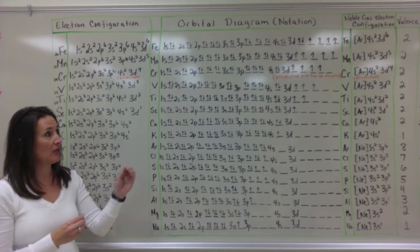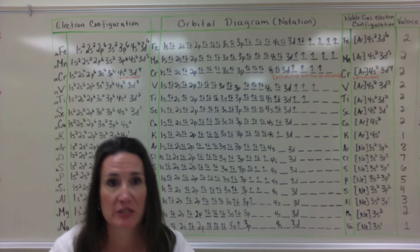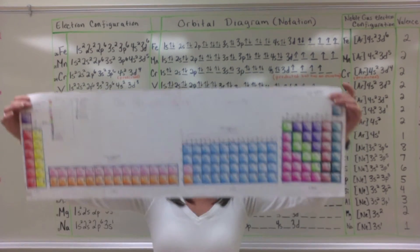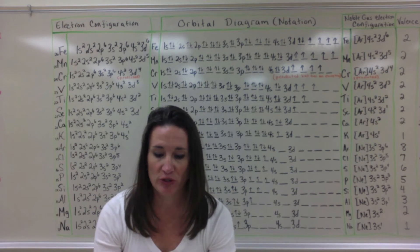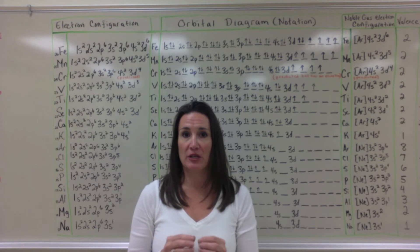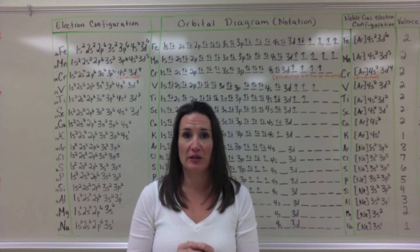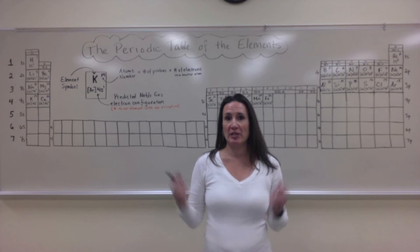What I'm going to have you do next is take all those noble gas configurations and grab your gigantic periodic table that we made before. We're going to add those into each box so that you can see there's a pattern you can use to predict the configuration of any element on the entire periodic table. Here's what your periodic table looks like.